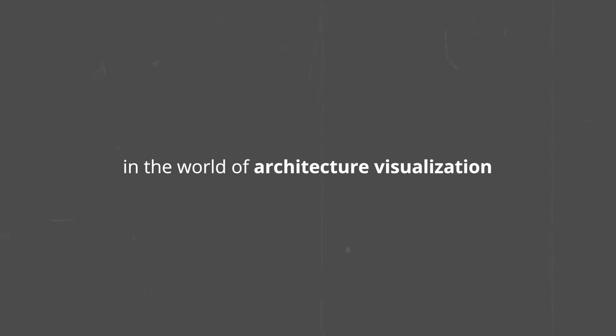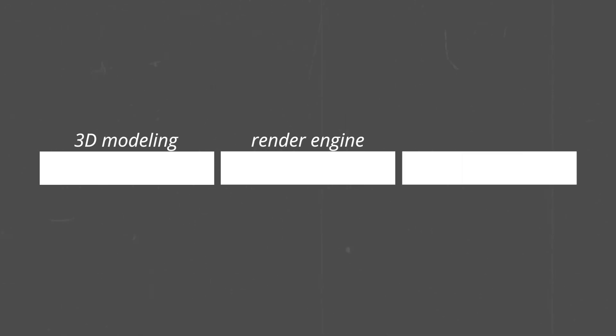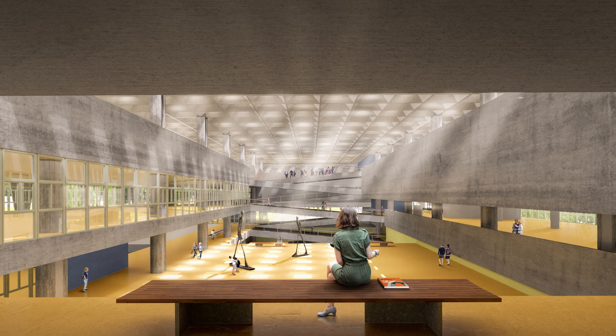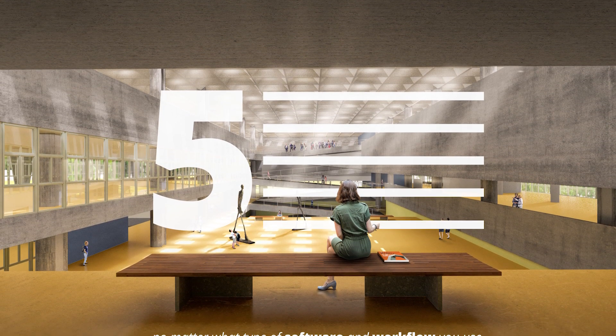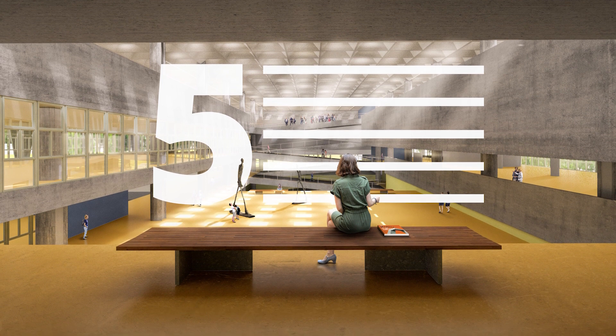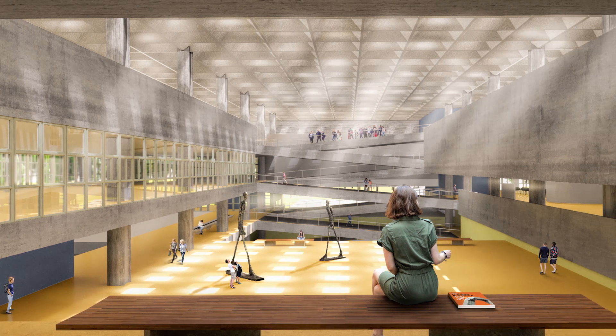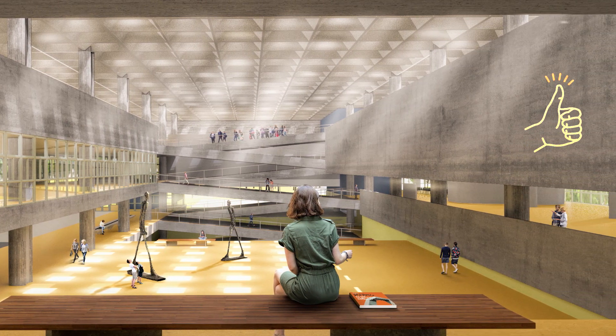In the world of architecture visualization, we are all aiming for a final product. There are several ways you can get there. Usually you have a 3D software for modeling, then you use a render engine to create a base image, and eventually you end up in Photoshop to post-produce the image. My workflow consists of spending much more time in Photoshop than in the actual render engine, like V-Ray for example. This five-point list will help you no matter what type of software and workflow you use, and if you give these five items closer attention, you've got a pretty high chance of having an amazing result.